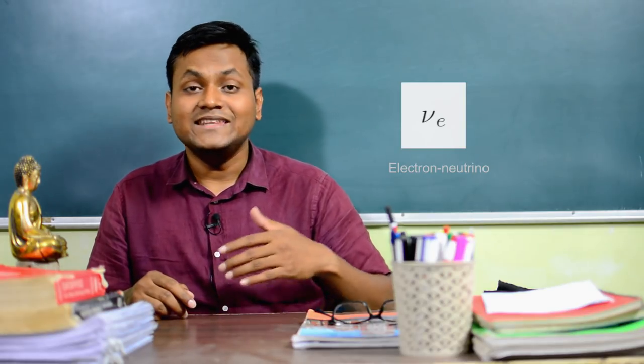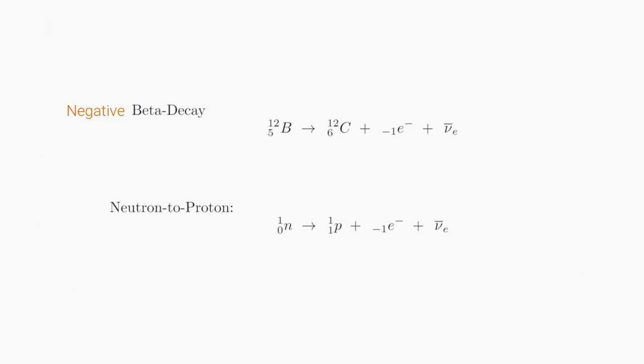There are different kinds of neutrinos, but in beta decay we deal with electron neutrinos, also simply called neutrinos. The matter version is the electron neutrino, and the antimatter version is the anti-neutrino or anti-electron neutrino. In the example of negative beta decay, when a neutron converts to a proton, it leads to the emission of a beta particle — an electron — and also an anti-neutrino.